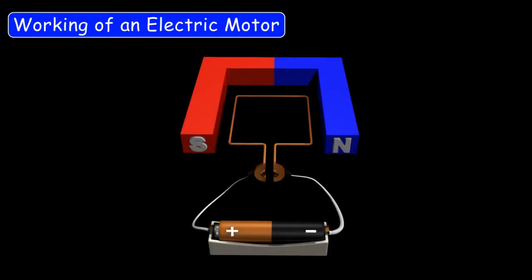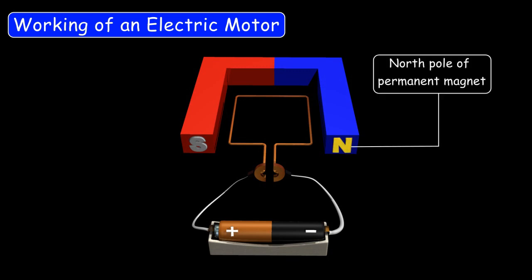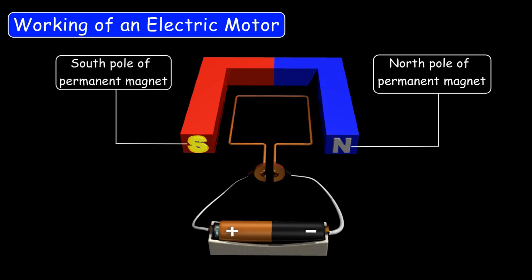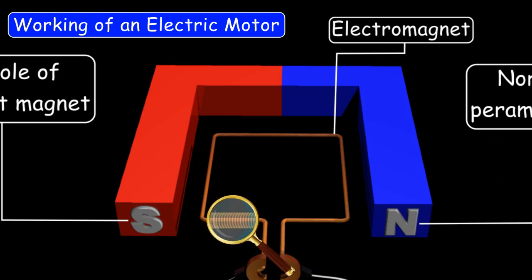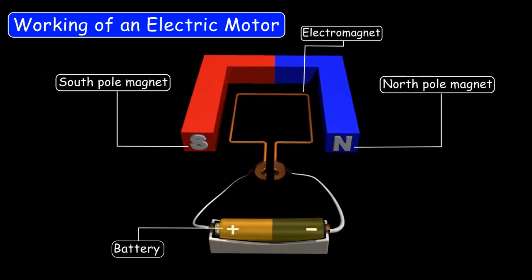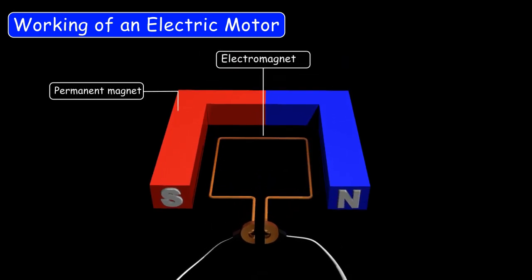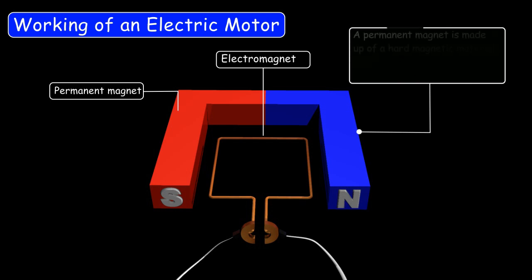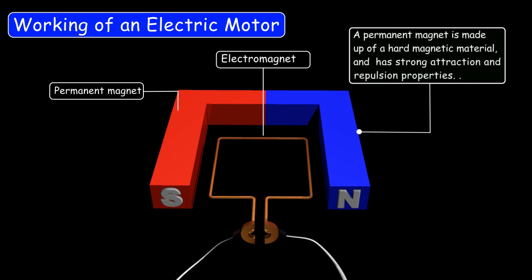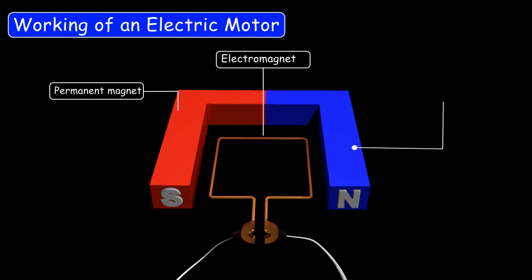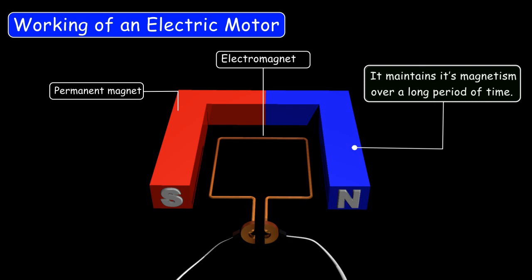Let's discuss the working of an electric motor. An electric motor consists of a permanent magnet. This is the north pole of the permanent magnet, and this is the south pole of the permanent magnet. An electromagnet is a coil wrapped around an iron core and a battery. Motion in the motor can be produced with the help of an electromagnet and a permanent magnet. A permanent magnet is made up of a hard magnetic material, and it has strong attraction and repulsion properties.